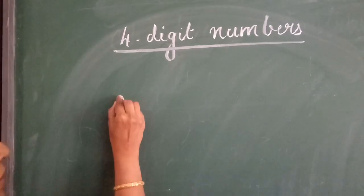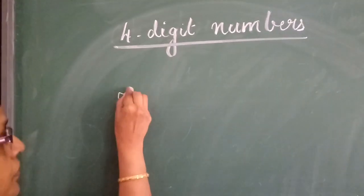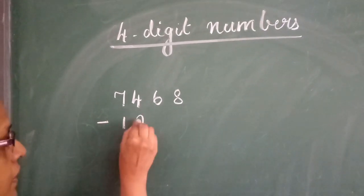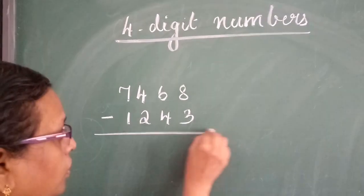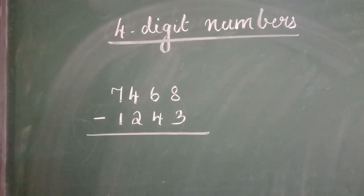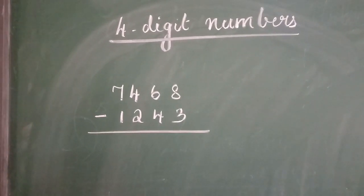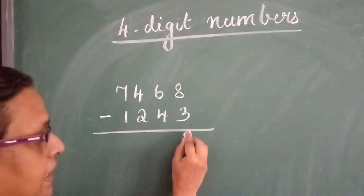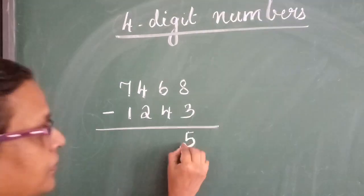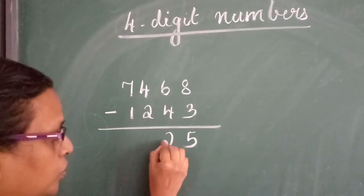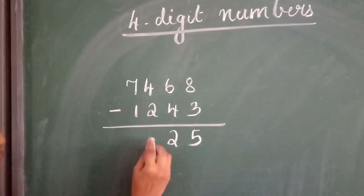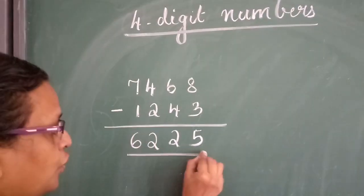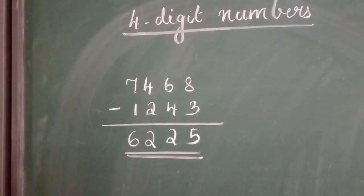Without borrowing, that means the top number is bigger. For example: 7,468 minus 1,243. Both are 4-digit numbers. The same process as subtracting 1-digit, 2-digit, or 3-digit numbers — we just start from the right. 8 minus 3 equals 5. 6 minus 4 equals 2. 4 minus 2 equals 2. 7 minus 1 equals 6. So, the answer is 6,225.